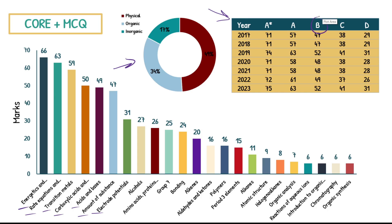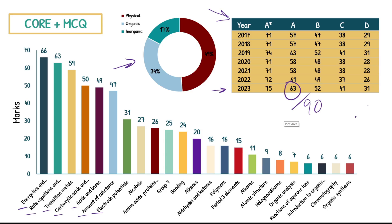The grade boundaries table is just for you to check what you need. In 2023, an A was 63 out of 90. Grade boundaries bumped up in 2023 — likely because 2022 had a lot more A-stars than previous years. I'd expect around the low 60s again for 2024, maybe high 50s if it was a really hard paper.